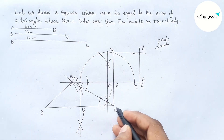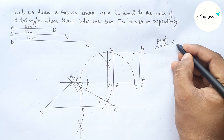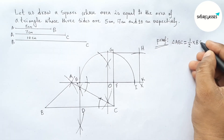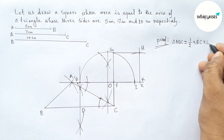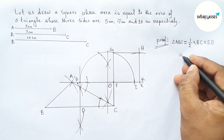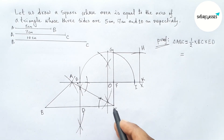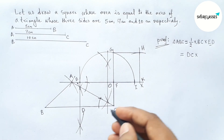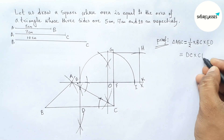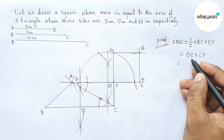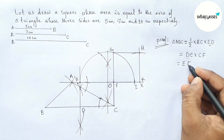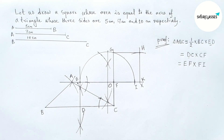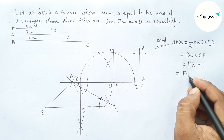Area of triangle ABC equals half into base into height. Here base equals BC and height equals ED. So area equals half of BC, that is DC, into ED. Now ED equals CF, so replacing ED with CF. And DC equals EF, so replacing DC with EF. Also CF equals FI, so replacing CF with FI.